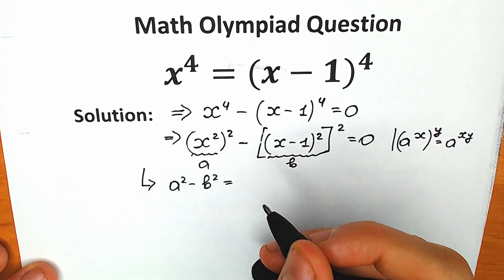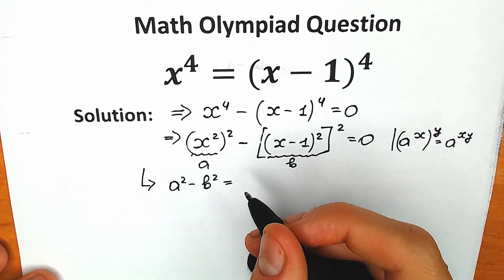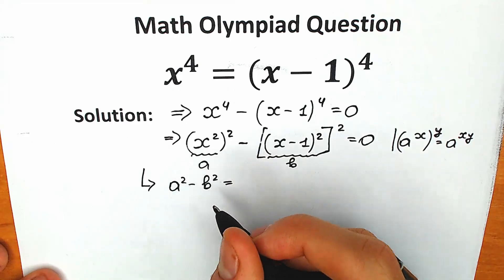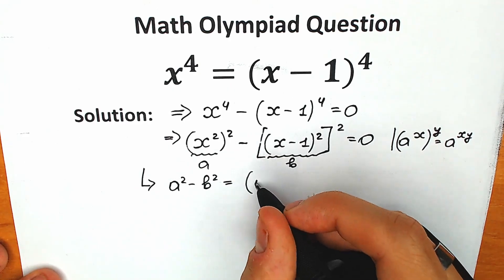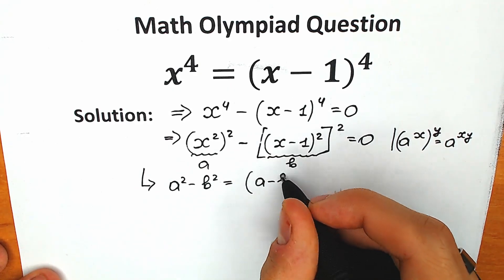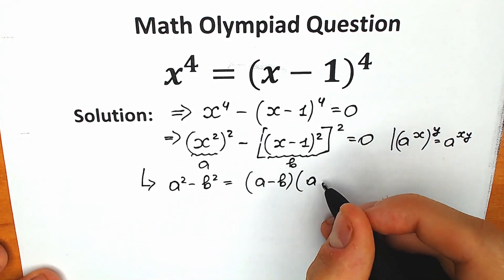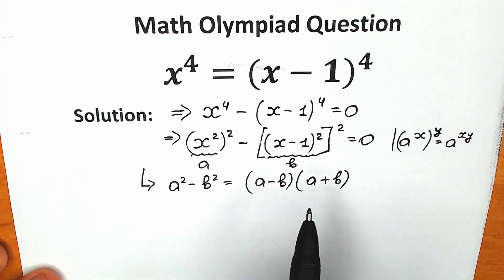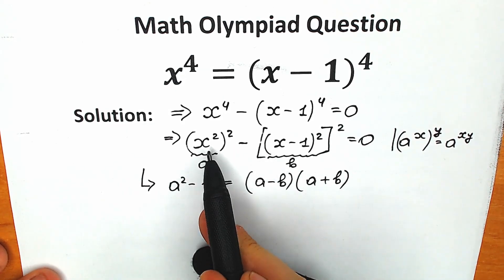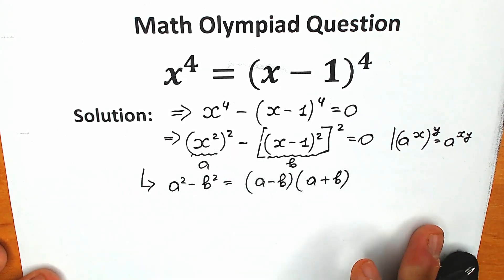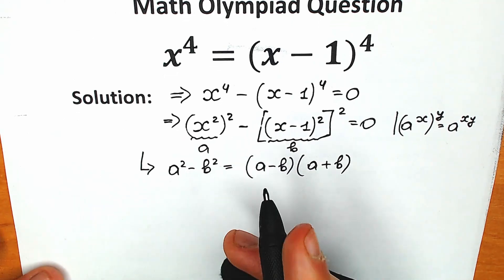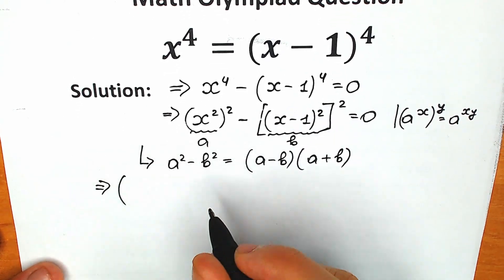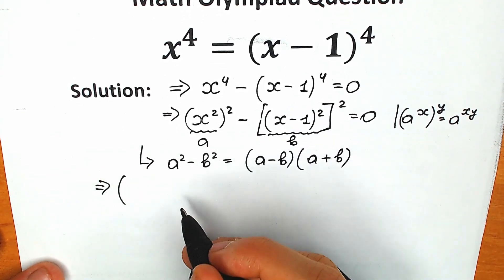This is maybe the most popular formula in algebra. It looks like: a squared minus b squared equals a minus b times a plus b. Let's apply this formula to our expression.